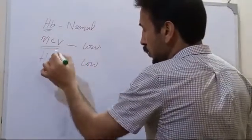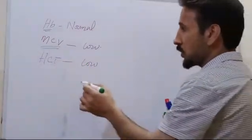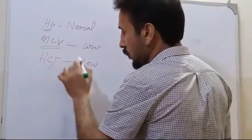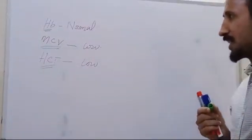The MCV is low, and so is the hematocrit level. They both are low. So what is the next step?